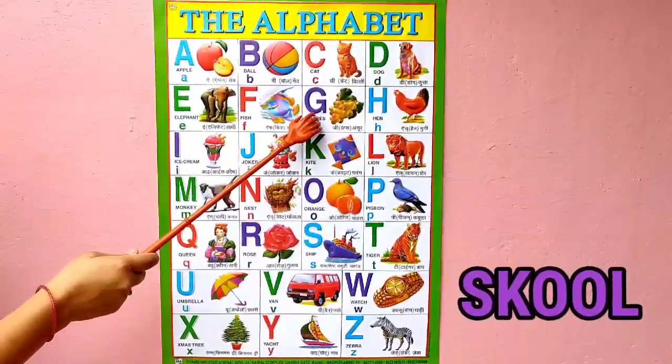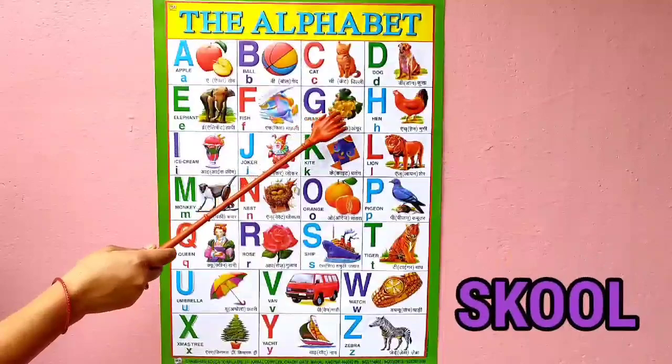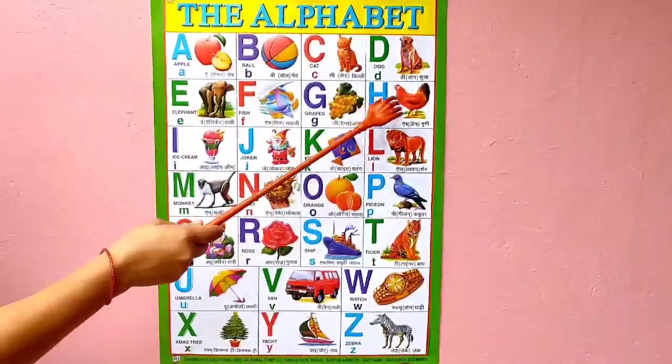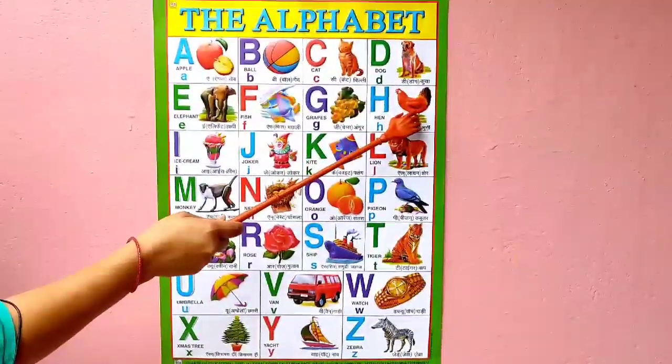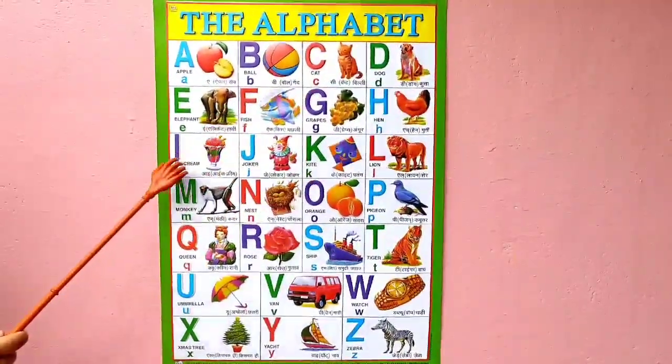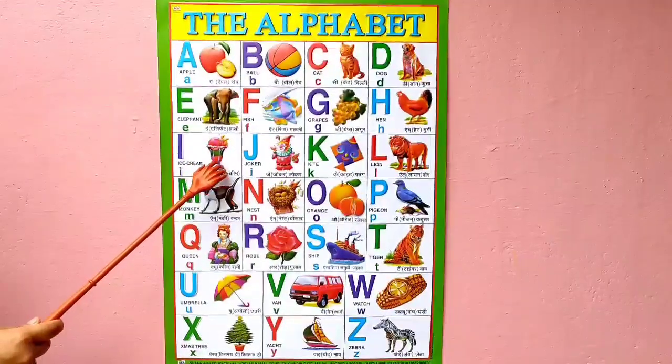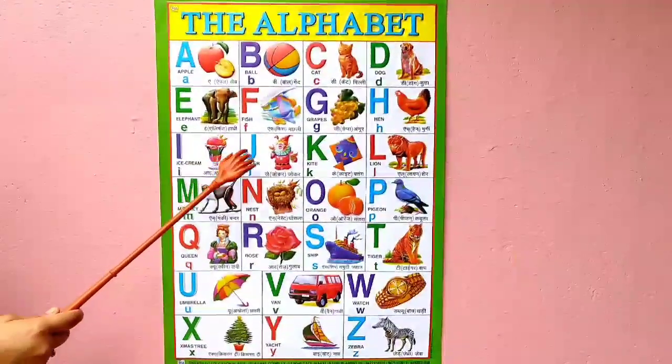G. G for Grapes. H. H for Hand. I. I for Ice Cream.